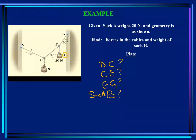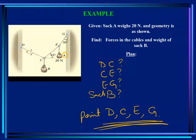We start from the point where we have maximum known values and minimum unknowns. I want you to concentrate on points D, C, E, and G, and tell me which point out of those four has the maximum known and minimum unknowns. If I go to point D, there is no known value at D, so I need a point with maximum known and minimum unknown.